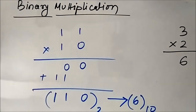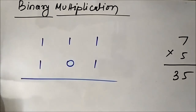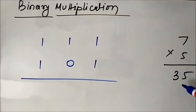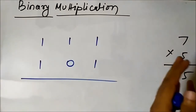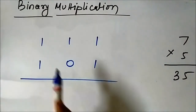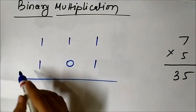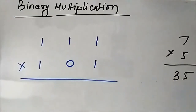Now let us take two 3-bit numbers and multiply them. The decimal equivalent is 7×5 = 35. We are going to perform this multiplication in binary form. 1 1 1 represents 7, and 1 0 1 represents 5.